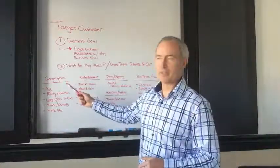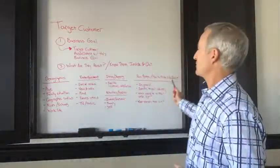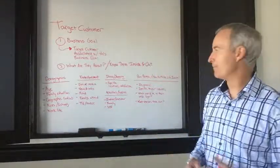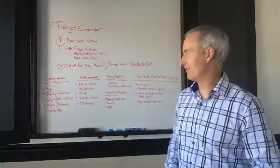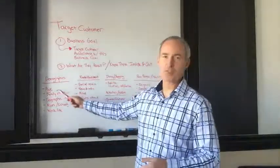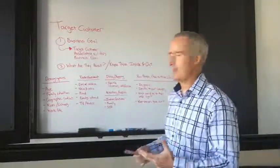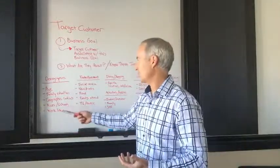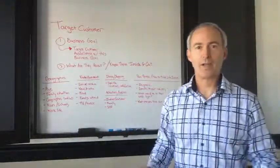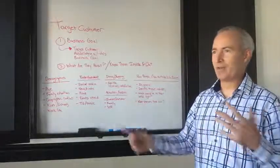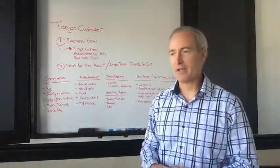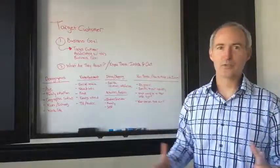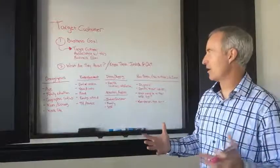When you start to look at that, here are four key areas where you need to know essentially everything about them. First, demographics is vital: age, family situation, geographic radius that they come from to visit your business or do business with you. Do they have kids? Which schools? What's their work life about? What is the inner workings of their daily hub of being — family, kids, schools, work, commuting, all that good stuff.